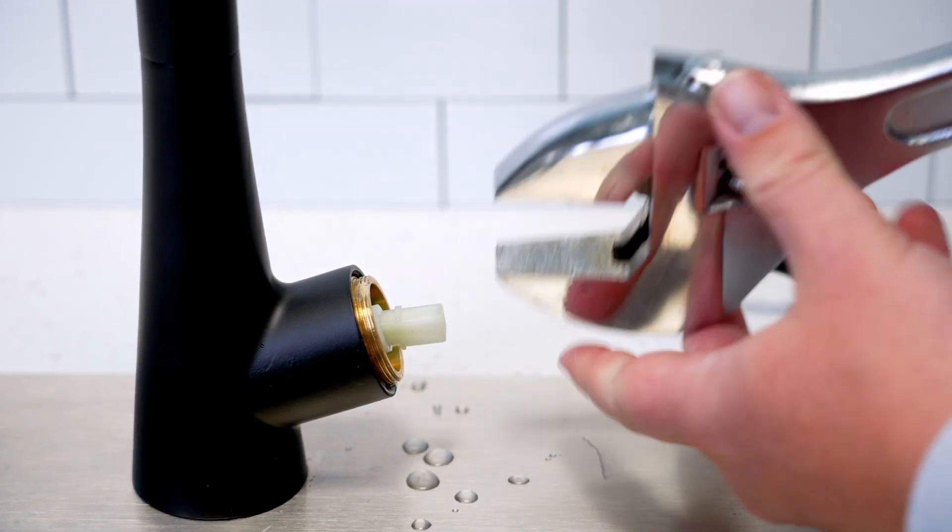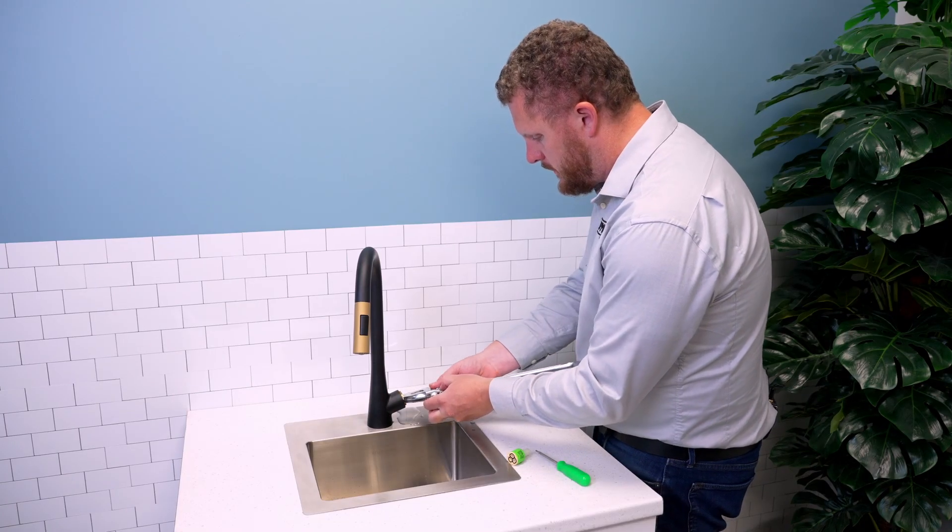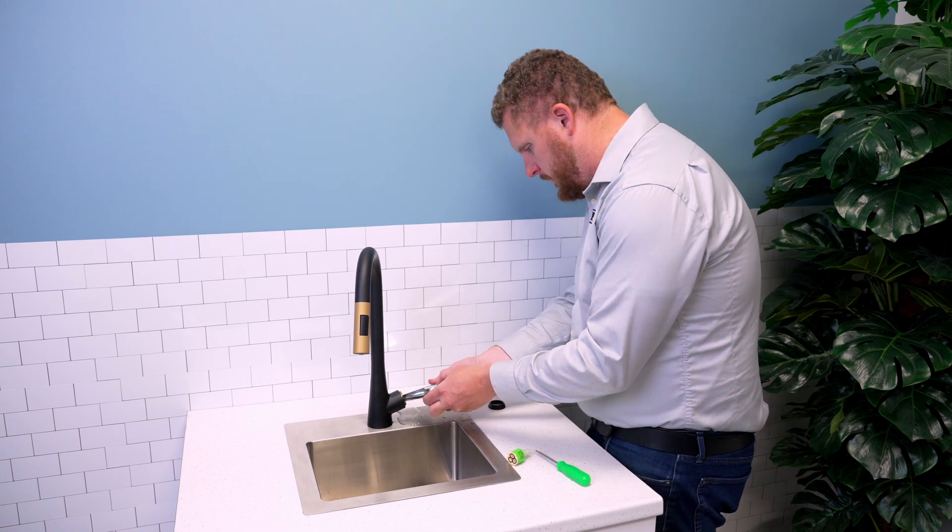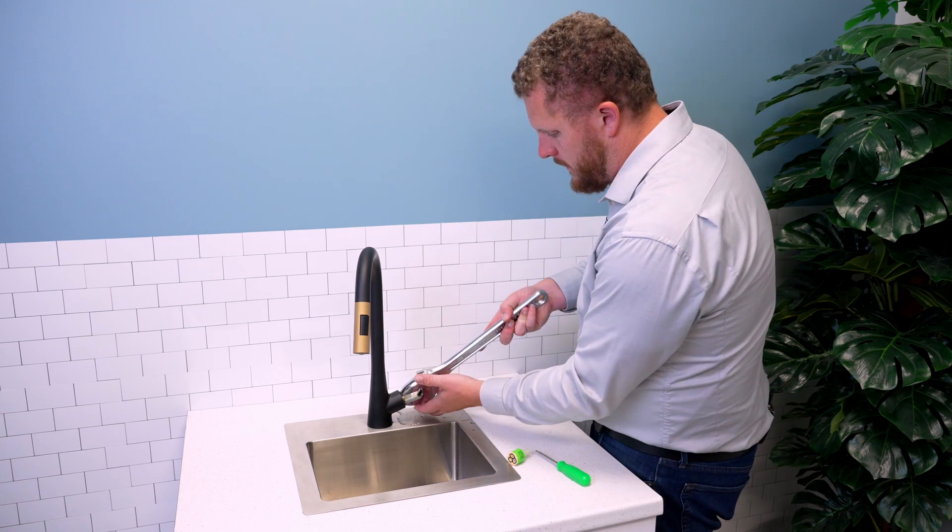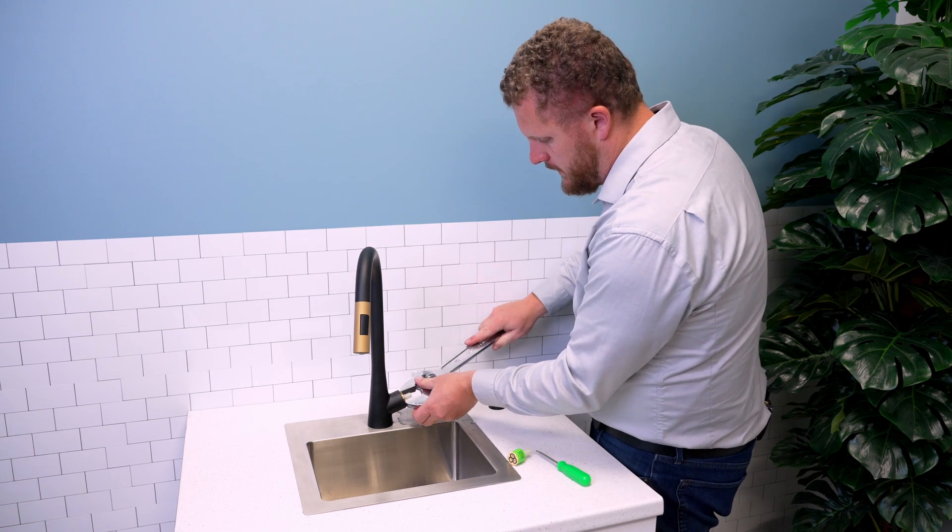And then it has to be tight, but not super tight because you don't want to damage the threads on the faucet body. So we'll just tighten it up a little bit here.